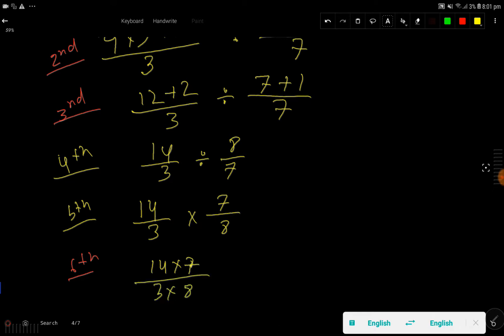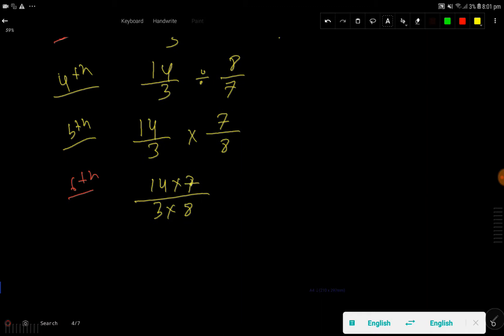If I divide this 14 by 2, I will get 7. If I divide this 8 by 2, I will get 4. So we're getting 7 times 7 divided by 3 times 4. 7 times 7, that is 49, divided by 3 times 4, that is 12. This is the answer.